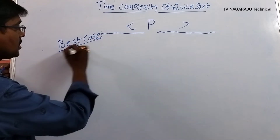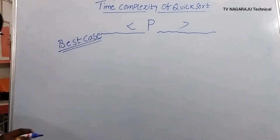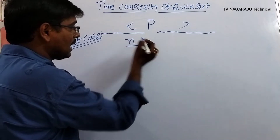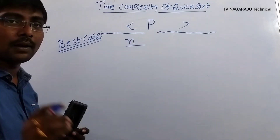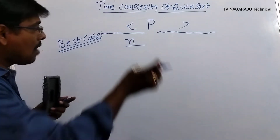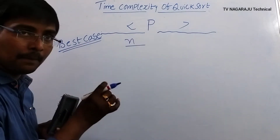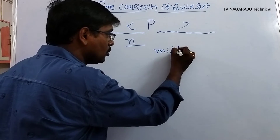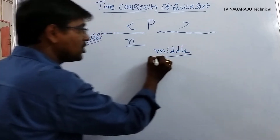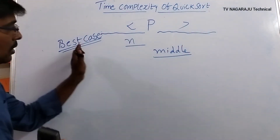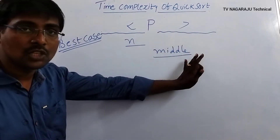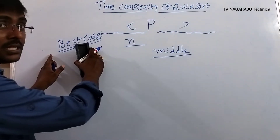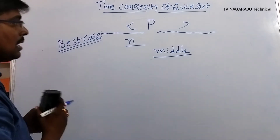The first one is the best case. What do you mean by best case? Assume the number of elements is n. After performing n comparisons, the pivot element moves to the middle position of the list. This situation is called the best case.